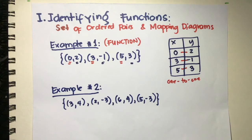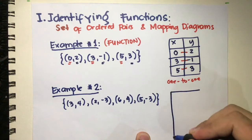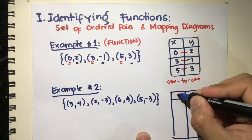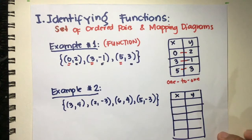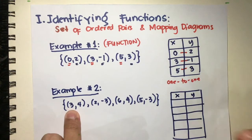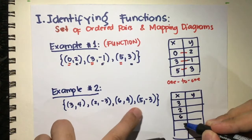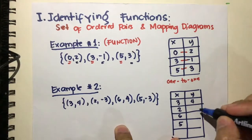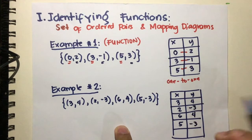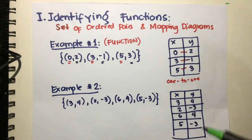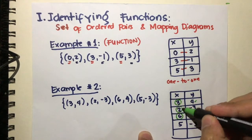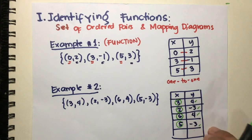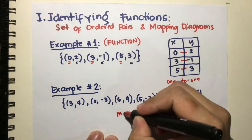Now let's have example number two. Using a table of values, let's identify all the x and y coordinates. The x-coordinates are 3, 2, 6, and 5, while the y-coordinates are 4, negative 3, 4, and negative 3. Observe that two x-values share the same y — 3 and 6 both map to 4, and 2 and 5 both map to negative 3.